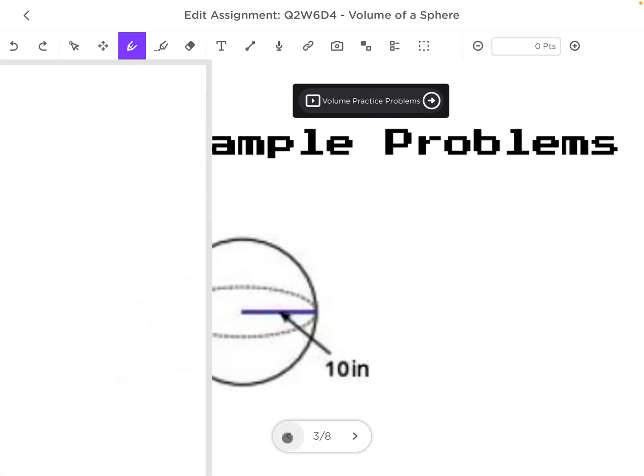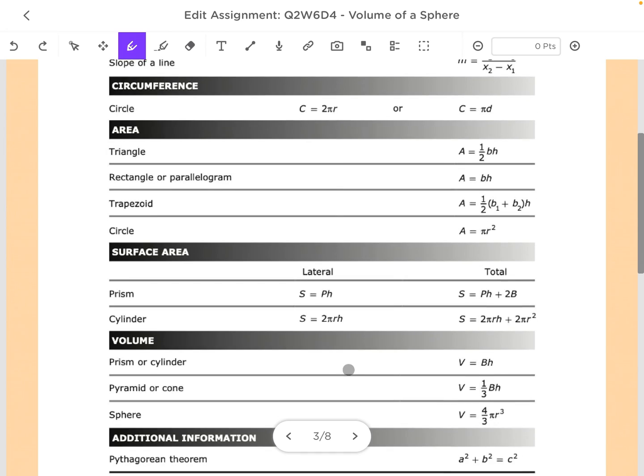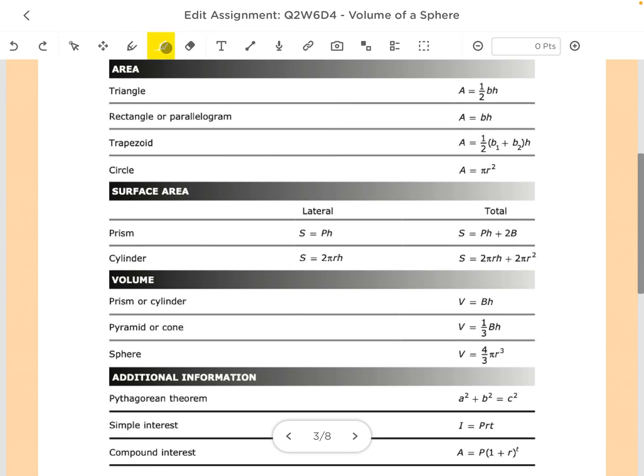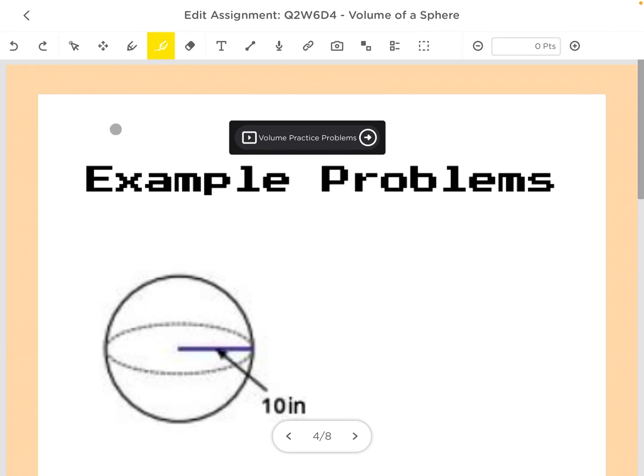So if we look back at our formula chart, we see volume of a sphere is V equals four-thirds pi r cubed. All right, so let's go ahead and work a couple of these problems real quick.